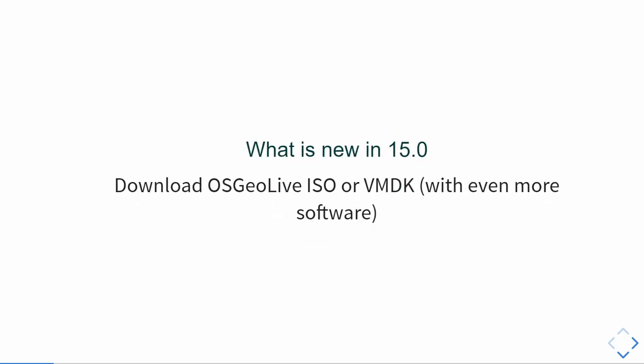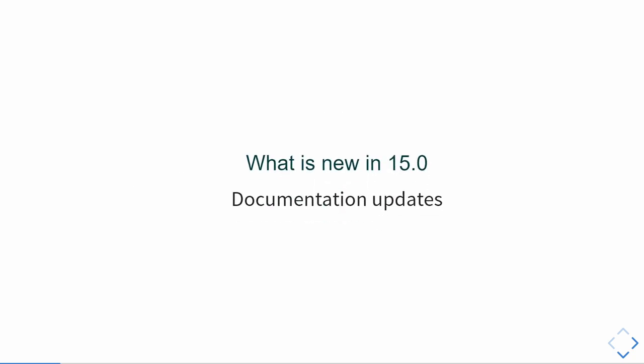Every time we release a new version we make an ISO, but the ISO has a size limit of five gigabytes. We also have a VMDK version, which contains all software, whereas the ISO is a selection — some packages are too large for the ISO. We also updated the documentation to fit the new software version, new projects, and added new translations.